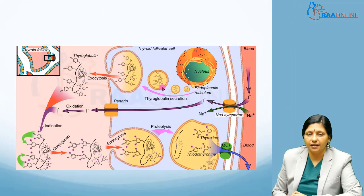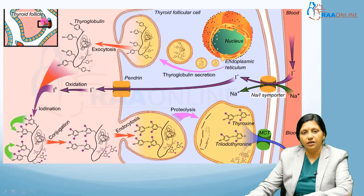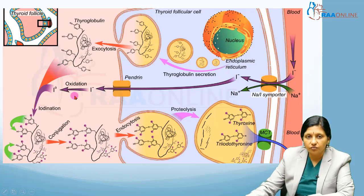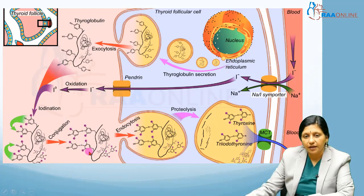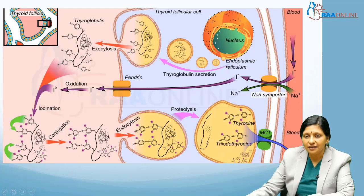How does a thyroid gland synthesize hormones? Inside the thyroid there is a follicle, and inside the thyroid follicular cells there is an import of iodine along with sodium. This iodine goes inside the follicular fluid and undergoes iodination, then conjugation with thyroglobulin. Endocytosis of this hormone occurs, and with the help of proteolysis there is synthesis of thyroxine and triiodothyronine, which are then released into the bloodstream.